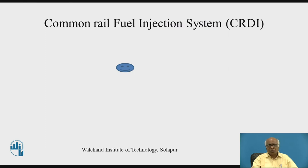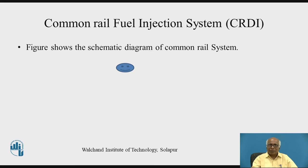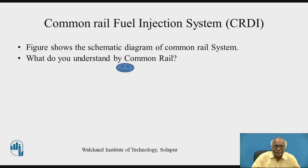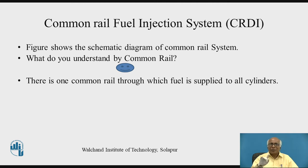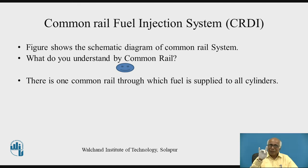One of the most commonly used systems is the Common Rail Fuel Injection System, sometimes also known as Common Rail Diesel Injection System — CRDI. The figure shows the schematic diagram of the Common Rail System. There is one common rail through which fuel is supplied to all the cylinders. In case of individual pump systems, there is a separate pump for each cylinder, but here there is only one pump and a Common Rail through which fuel is supplied to all cylinders.